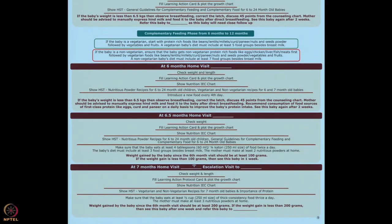At the seven-month visit, the baby should have gained at least 200 grams since the six-month visit. If the baby's weight gain is less than 200 grams from the six-month visit, see the baby again after one week. In the complementary feeding stage, if the baby is not gaining weight, do not wait too long — weight stagnation will affect height.